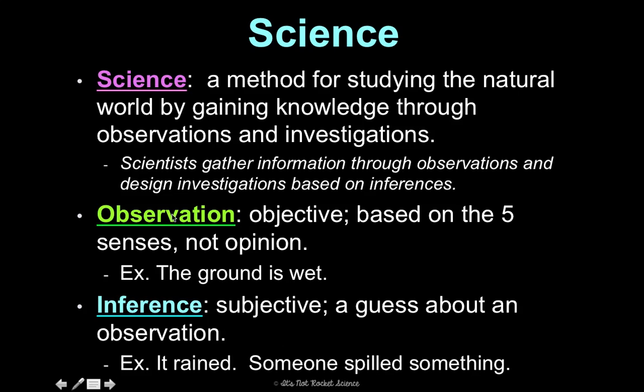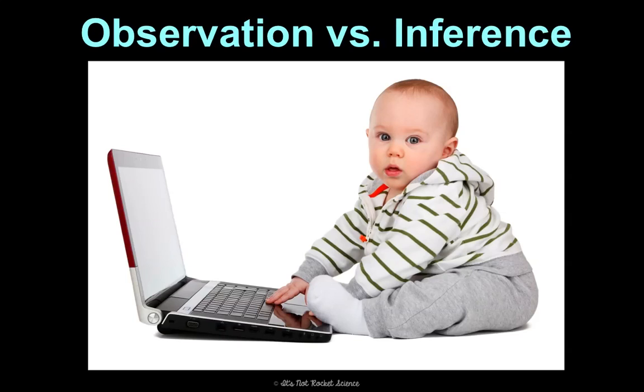Whereas an inference is subjective. It is a guess about an observation. So I could observe that the ground is wet, and then I could infer that it rained, or infer that someone spilled something. And then, so what scientists do is they start with making observations. That leads them to infer about those observations, and then again, now they're going to design an experiment to test and see what happened. So let's practice. I think this picture is hilarious. I want you to think of what are some observations you can make about this picture, and what are some inferences you can make about this picture.